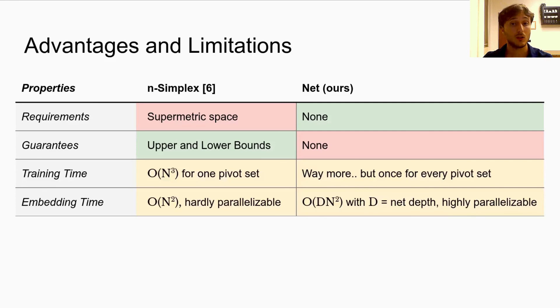Concerning computational costs, the offline training time of the n-simplex is cubic in the number of pivots, while the training phase of our network depends on the number of iterations needed to converge, but usually takes longer. However, once trained, our model can handle different sets of pivots, while the simplex approach needs to repeat the offline procedure for each new set of pivots.